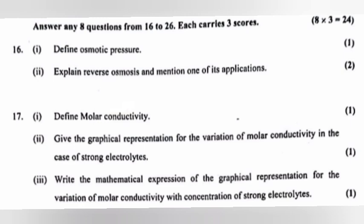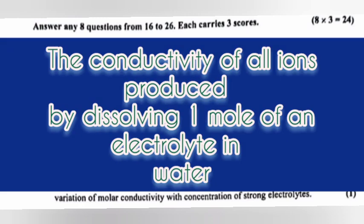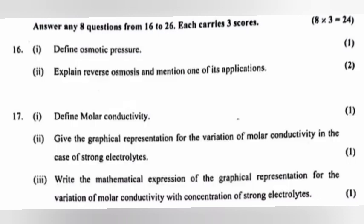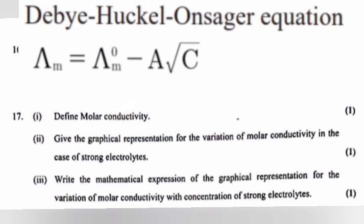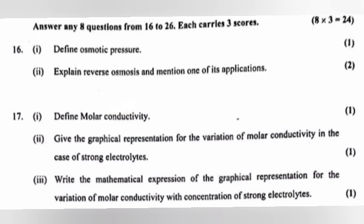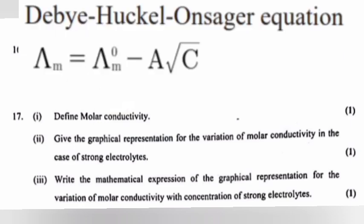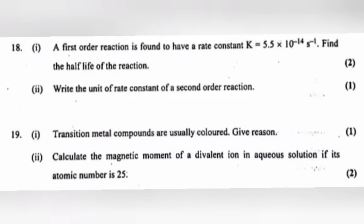Question 17 Part 1: Define molar conductivity. Answer: The conductivity of all ions produced by dissolving one mole of an electrolyte in water. Molar conductivity = 1000κ / M. Part 2: Give the graphical representation for the variation of molar conductivity for strong electrolytes. Part 3: Write the mathematical expression — answer: Debye-Hückel-Onsager equation.